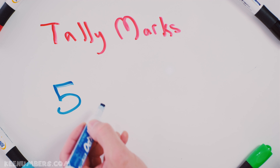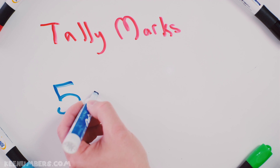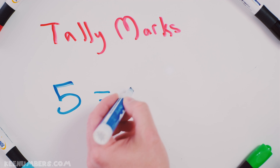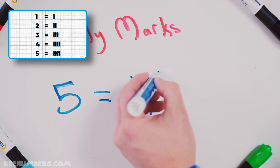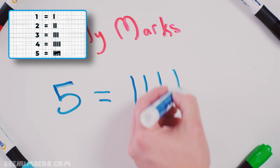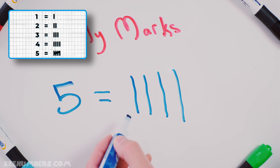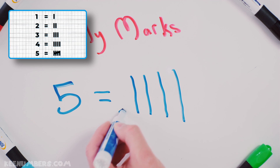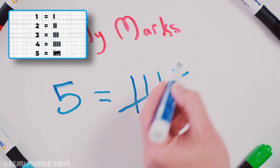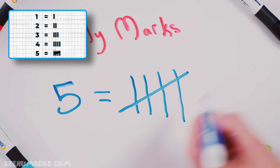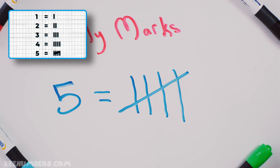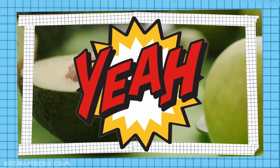We already saw it, but let's look at 5. In terms of tally marks, you're going to go 1, 2, 3, 4, and every 5th one you draw a line that is diagonal. That's 5 as tally marks.